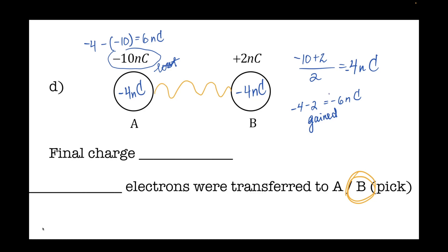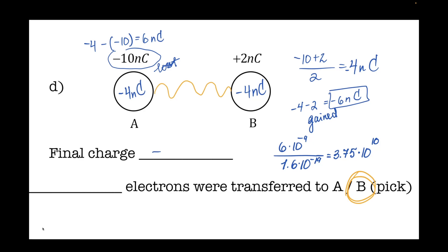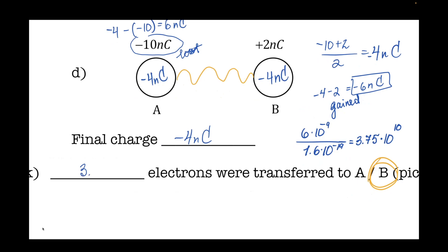How many electrons? If the change is 6 nanocoulombs, take 6 × 10⁻⁹ and divide by 1.6 × 10⁻¹⁹. Six divided by 1.6 is 3.75, and negative 9 plus 19 gives 10 to the 10th. So the final charge is negative 4 nanocoulombs, and 3.75 × 10¹⁰ electrons were transferred.